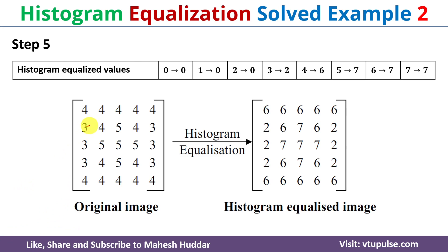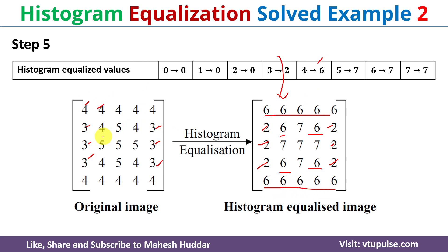We can see in the input image that the 3s are replaced by 2 in the equalized output, the 4s are replaced with 6, and the 5s are replaced with 7. This is how we perform histogram equalization for the given input image. I hope the concept of histogram equalization is now clear.